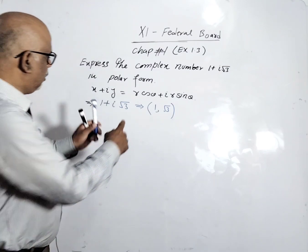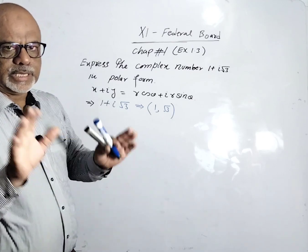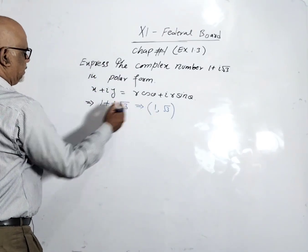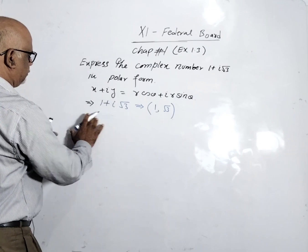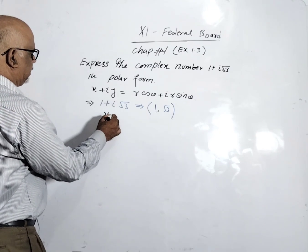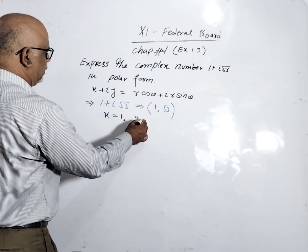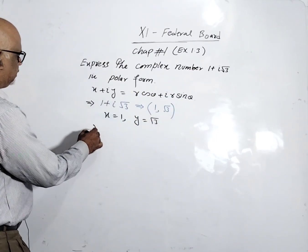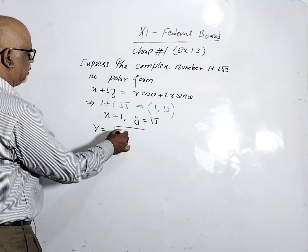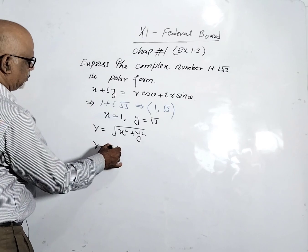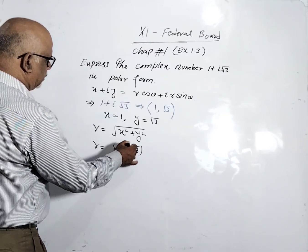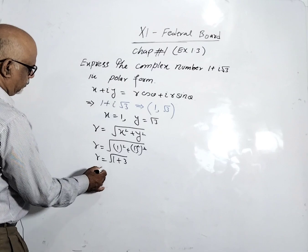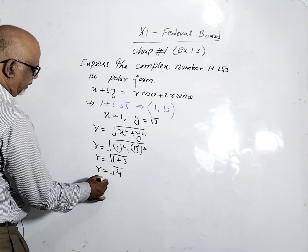When writing a complex number as an ordered pair, we don't write the iota — it is understood that the first number is real and the second is imaginary. So here x = 1 and y = √3. We find r = √(x² + y²) = √(1² + (√3)²) = √(1 + 3) = √4, so r = 2.